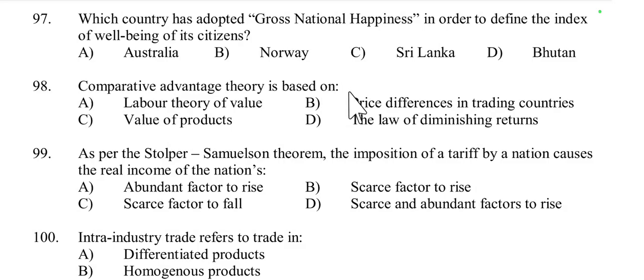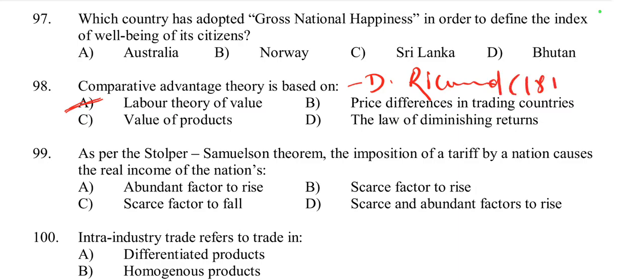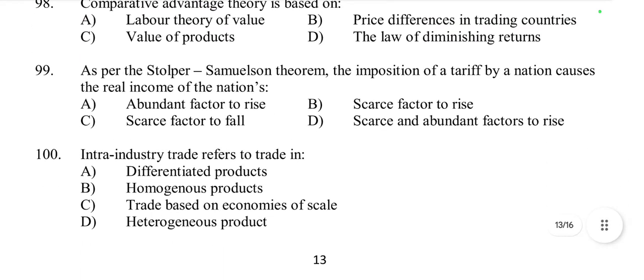Question 98: The comparative advantage theory is based on the labor theory of value — true. Comparative advantage theory was developed by David Ricardo in 1817. It is based on the labor theory of value and explains the benefits of international trade by attributing them to differences in relative opportunity costs of producing the same commodities between countries, recommending countries specialize in exports where they have a comparative advantage.